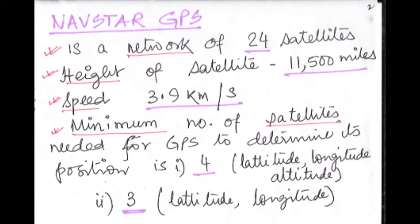A very important point that can be framed as a question: what is the minimum number of satellites needed for GPS to determine its position? The answer can be 4 or 3. If we want to know latitude, longitude, and altitude, then 4 satellites are needed. But if we want to know only latitude and longitude, then 3 will suffice. If the exam asks for the minimum number generally, it is 4; if it specifically asks for only latitude and longitude, the answer is 3.